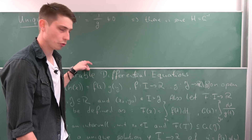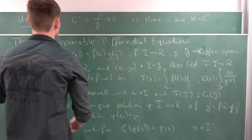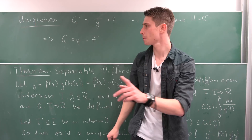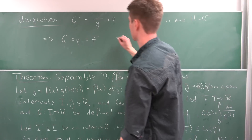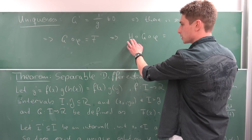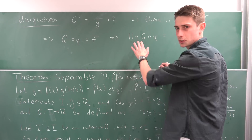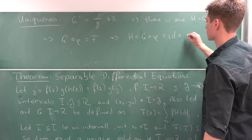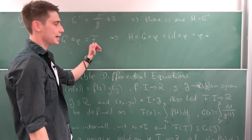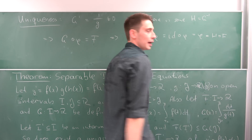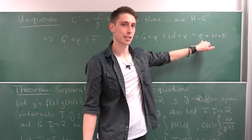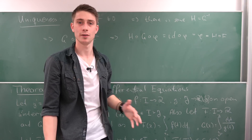This is really useful because we know by the theorem that we have the connection G composed with phi equals F. Now we can apply our inverse function H on both sides. That also means we have H composed with G composed with phi. The inverse function in composition with the function itself is just the identity. So we have the identity composed with phi, which is just phi itself. And on the right side we have H composed with F. That's exactly what we wanted to show — every new solution phi can be expressed in the form H composed with F. So we have shown the uniqueness.